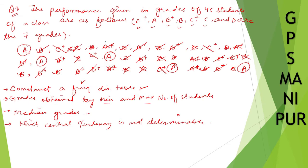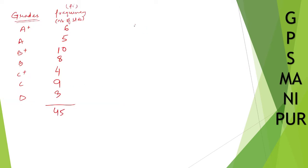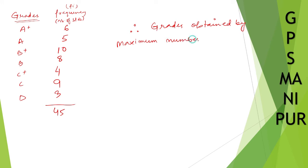Let us check whether our data is correct: 5 + 6 = 11, 11 + 10 = 21, 21 + 8 = 29, 29 + 4 = 33, 33 + 9 = 42, 42 + 3 = 45. We got total 45 and we know there were 45 students, so our data is correct. We have completed constructing the frequency distribution table. The grade obtained by the maximum number of students is B+.